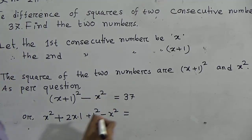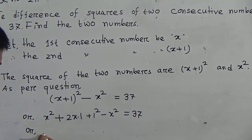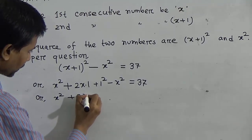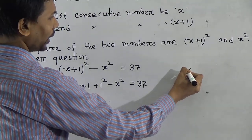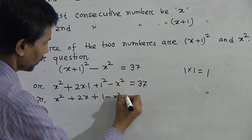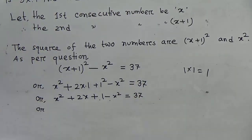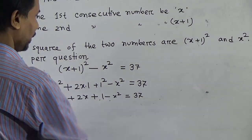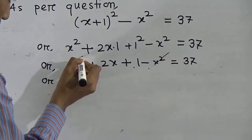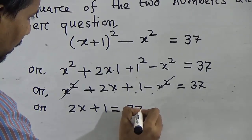So the equation becomes: x² + 2x·1 + 1² minus x² = 37. Now, 1 square means 1 into 1, which is 1. So we have x² + 2x + 1 minus x² = 37. The x² and minus x² are the same terms on opposite sides, so they cancel out, giving us 2x + 1 = 37.